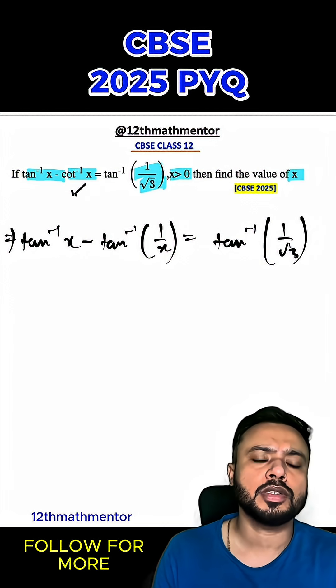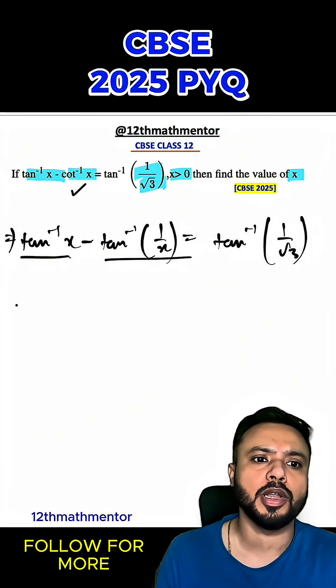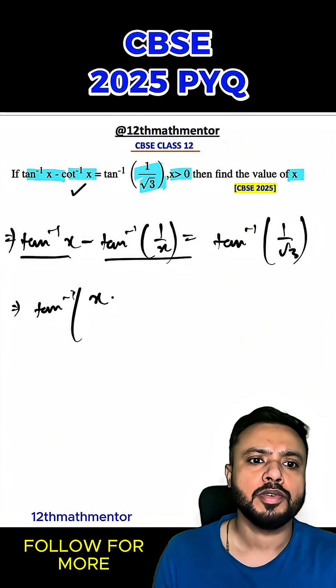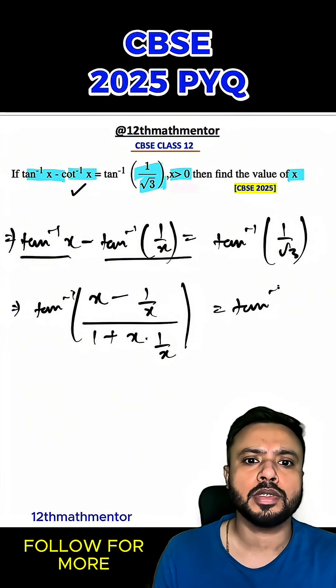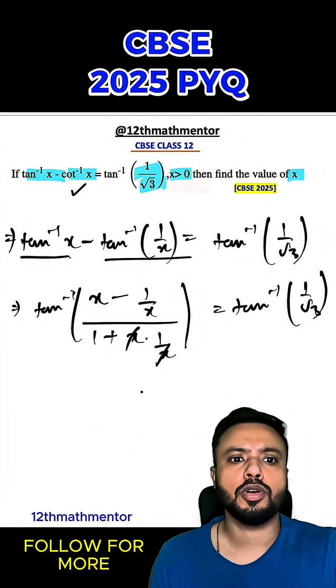The purpose behind converting cot⁻¹(x) to tan⁻¹(1/x) is that we can now use the tan⁻¹(a) - tan⁻¹(b) formula. So it becomes tan⁻¹((a-b)/(1+ab)), which is tan⁻¹((x - 1/x)/(1 + x·1/x)) = tan⁻¹(1/√3). These x terms cancel out.